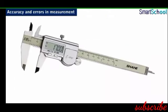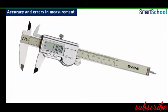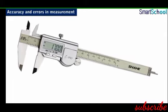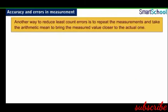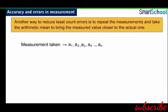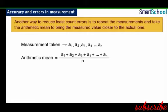Least count error can be minimized or eliminated by using high precision instruments or improving experimental techniques. Another way to reduce such errors is to repeat the measurements and take the arithmetic mean to bring the measured value closer to the actual one. If n measurements are taken — a1, a2, a3, a4, and so on till an — then the final value is taken as the arithmetic mean of these n measurements. In the absence of the true value, this arithmetic mean is treated as the true value.